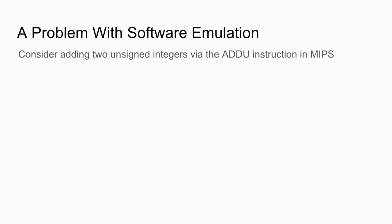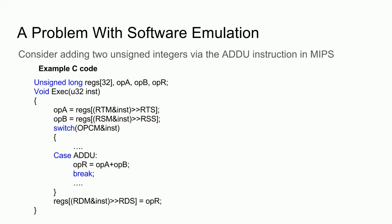The ADDU instruction is used to add two 32-bit unsigned integers together. On the left is some example C code which would execute this instruction. Here I decoded the instruction inline to save space. We begin by retrieving the first value to add, operand A, and then retrieve the second value to add, operand B. We then need to figure out what instruction is being executed and jump to that portion of the code, done here via a switch statement. Once we reach the code for the ADDU instruction, we add the two operands together and store them in the result variable. Then we exit the switch and store the result back into memory.